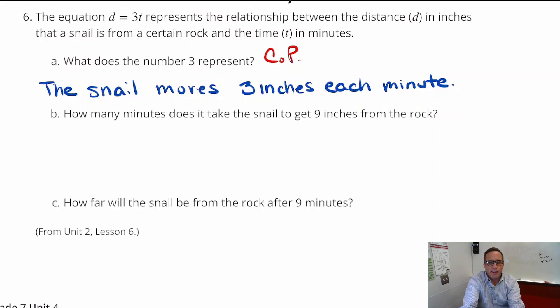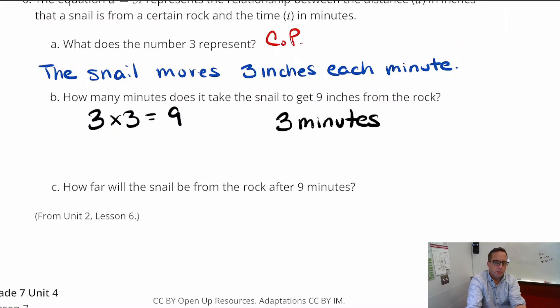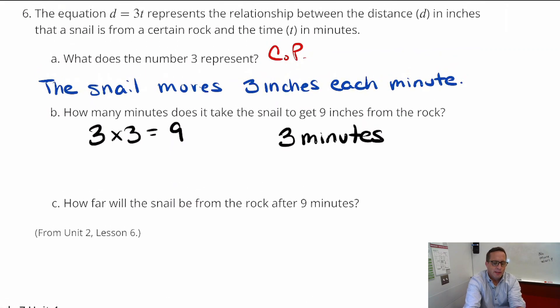But, how many minutes does it take the snail to get 9 inches from the rock? 9 inches from the rock. Alright, well. So, if it's moving 3 inches every minute, 3 inches every minute, it's going to take, 3 goes into 9 three times. So, that's going to take 3 minutes. Because 3 times 3 is 9. So, it's going to be 3 minutes to get there. How far will the snail be from the rock after 9 minutes? After 9 minutes.